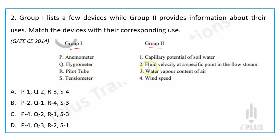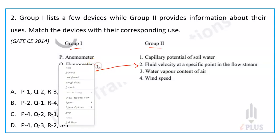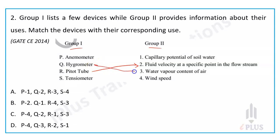Anemometer measures wind speed, so P matches with wind speed. Pitot tube measures flow velocity, so R is matched accordingly. Hygrometer measures water vapor or humidity — it is like a hydrometer, so Q matches with option 3.